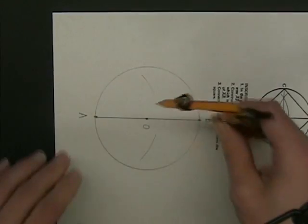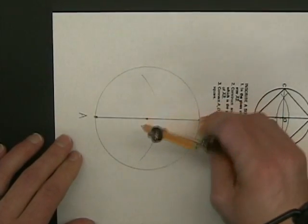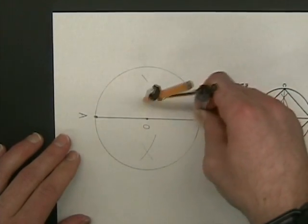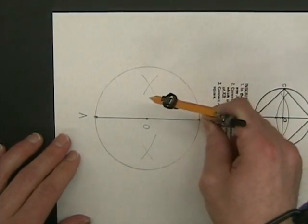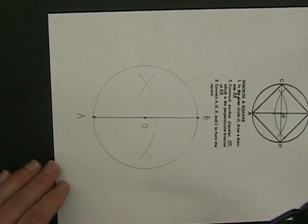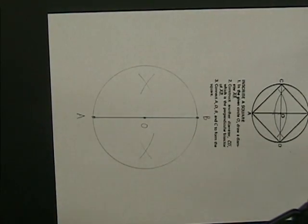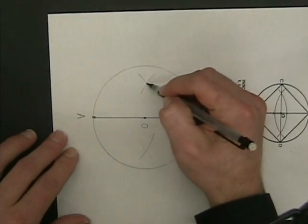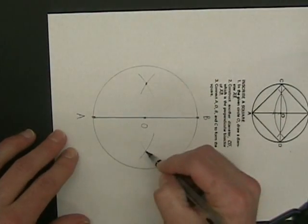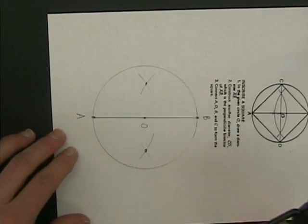And without changing my compass width, I'm going to put my compass point on B and make an arc above and below AB. So I should have two arcs that intersect above AB and two arcs that intersect below AB.